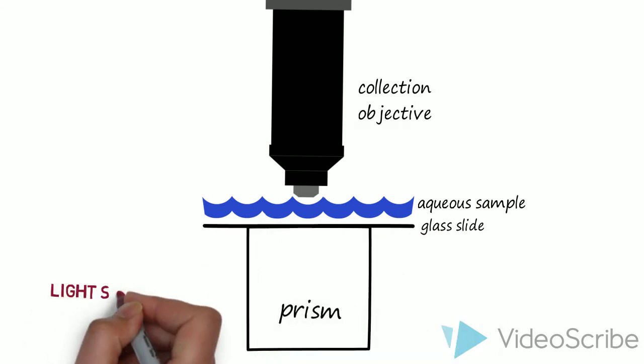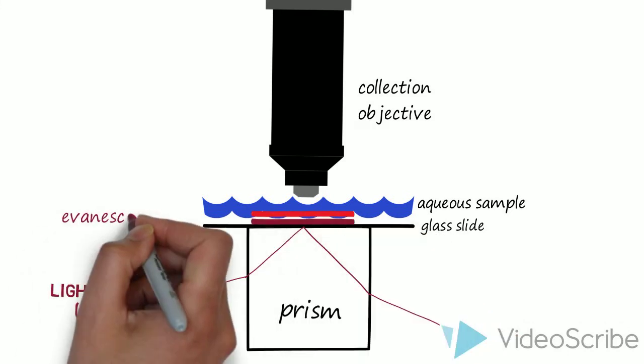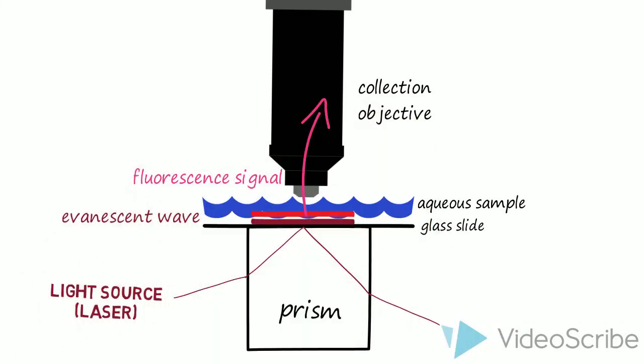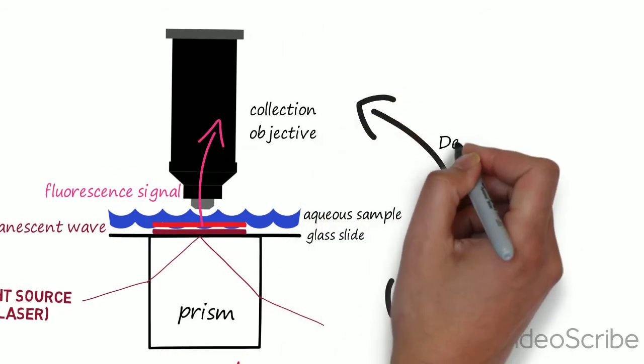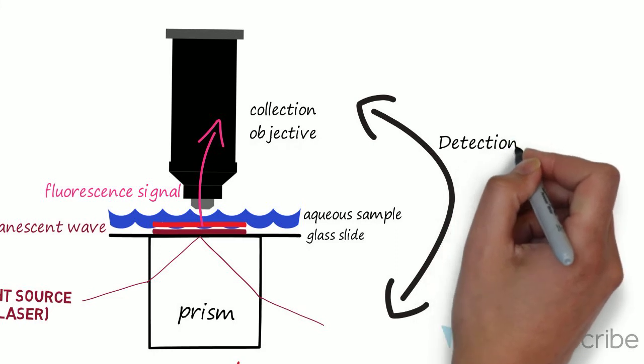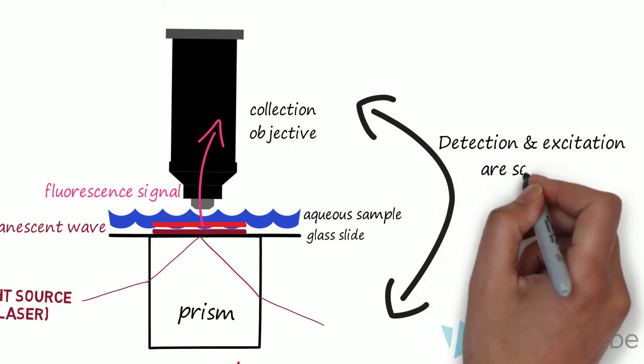The excitation beam passes through a prism situated with the sample to hit the glass-water interface past the critical angle and create the evanescent wave. Note that the excitation and emission parts of the microscope are situated on opposite sides of the sample. This allows the objective to collect only the fluorescent signal.